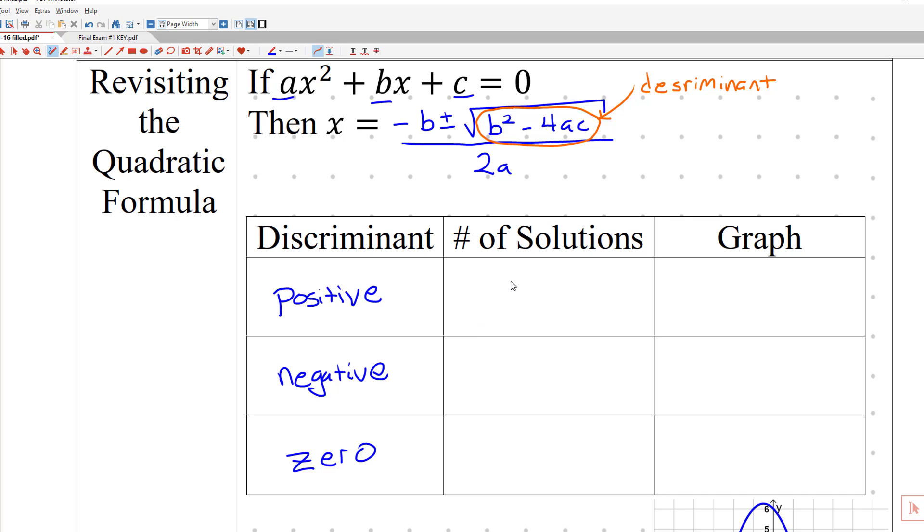And as I said, if it's positive, it's just like what we had in yesterday's homework, we have two solutions. If it's negative, there are no solutions. And if it's zero, we have exactly one solution, because you're doing plus or minus the same number.